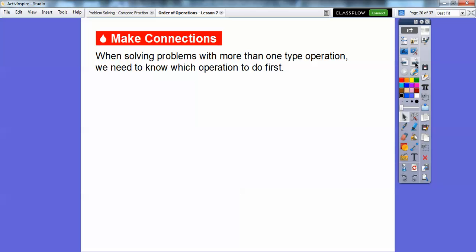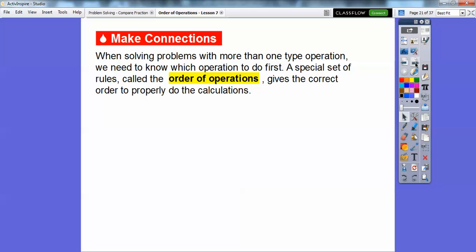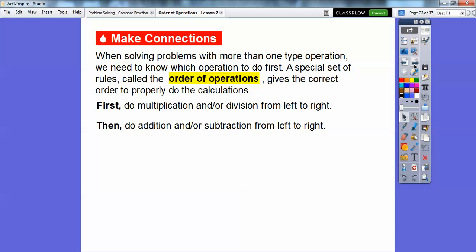So here's how we connect this up. When solving problems with more than one type of operation, we need to know which operation to do first. So a special set of rules, called the order of operations, gives the correct order to properly do the calculations. You're going to be using this special set of rules for the rest of your math classes that you're going to take, all the way through college. So the first thing we do is we do any multiplication or division from left to right. If you see a multiplication or division sign in there, you have to do that first. And then after you take care of that, then you do the addition and subtraction from left to right.